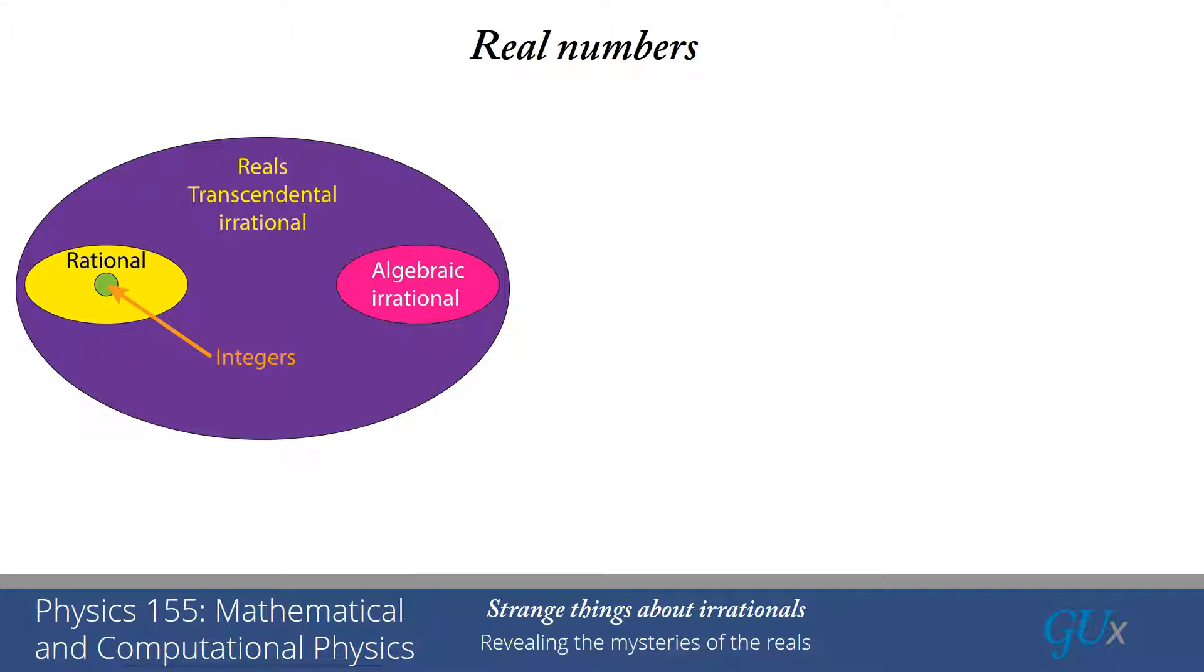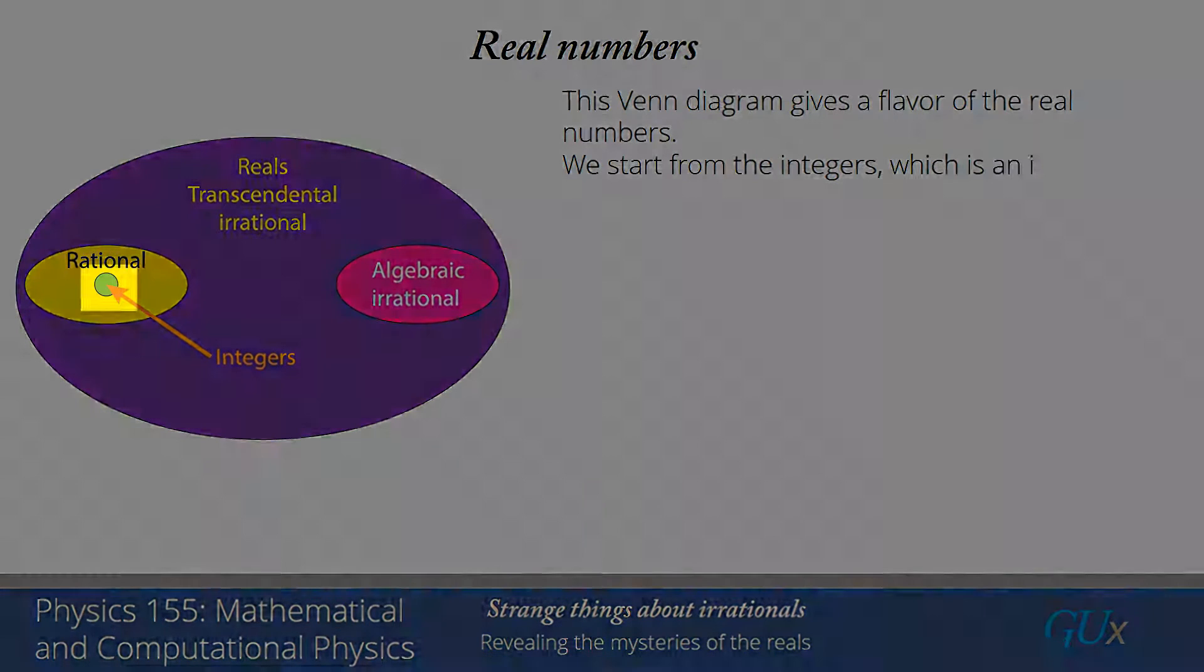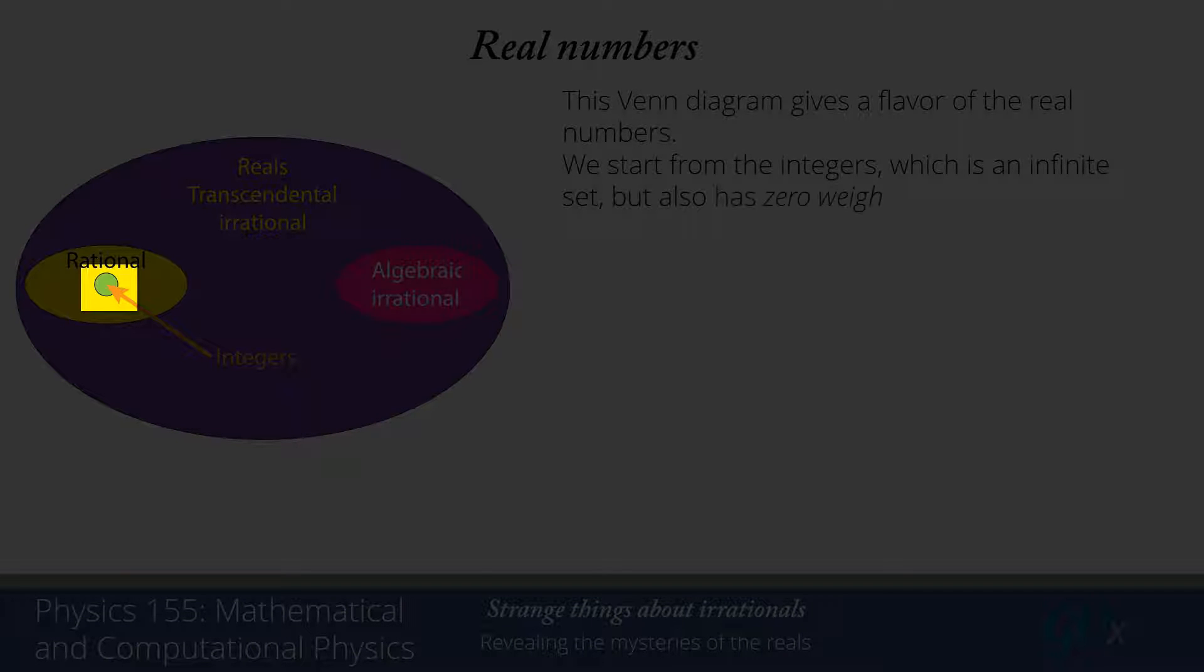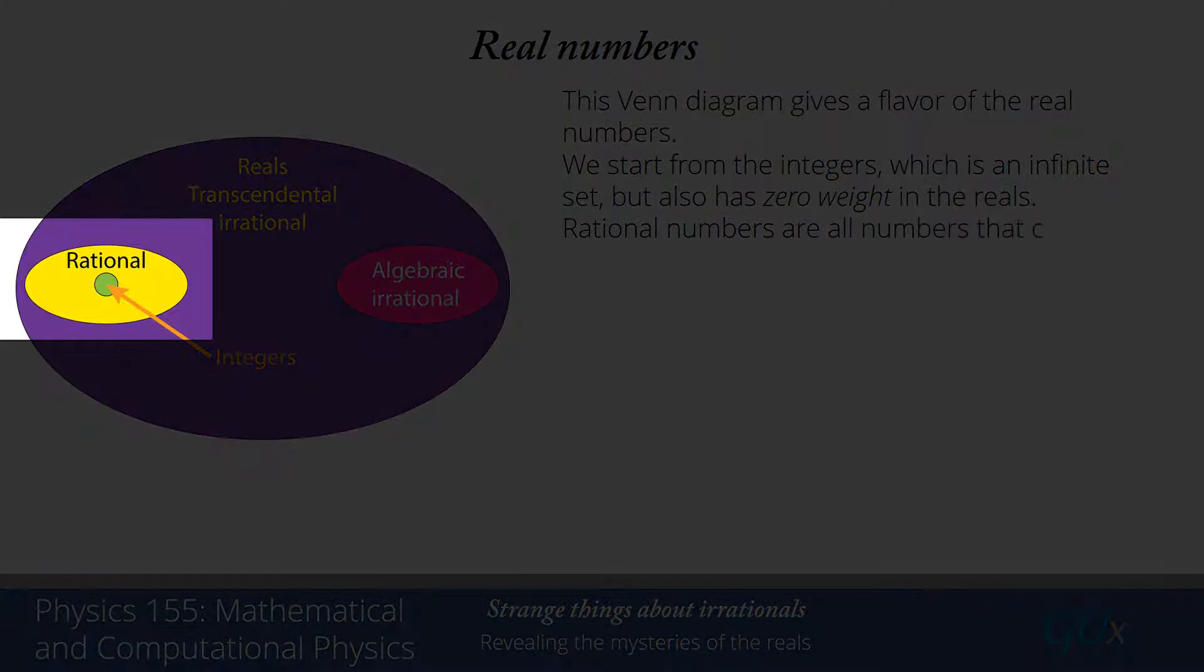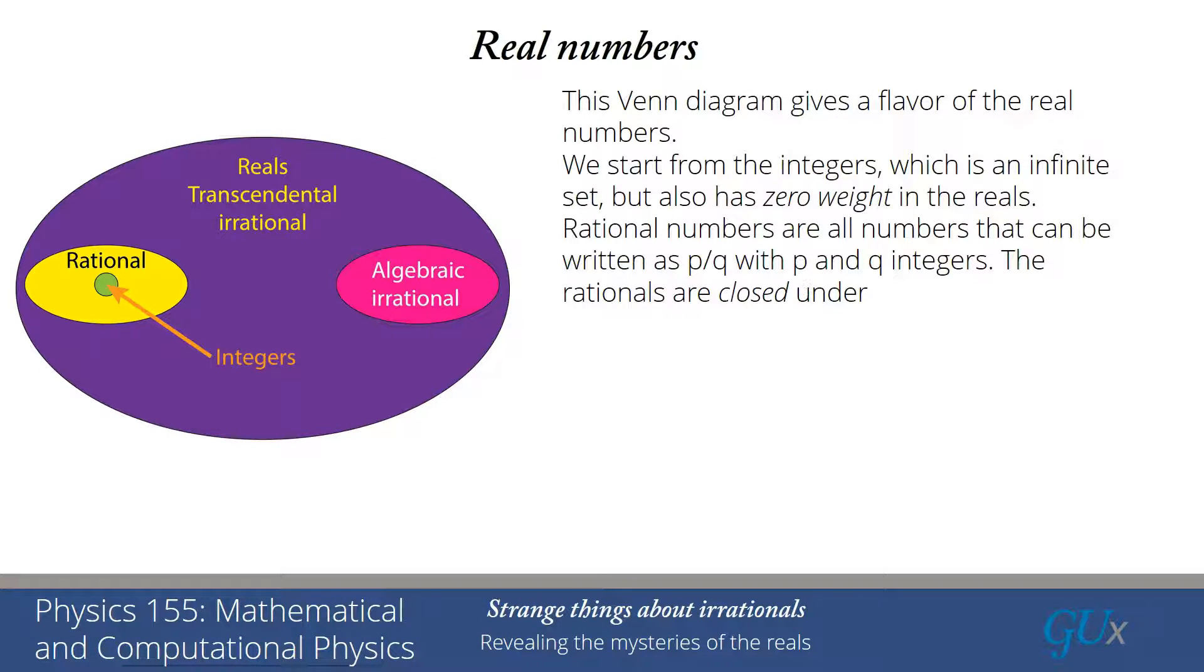Here I have on the left-hand side a Venn diagram that gives a flavor of the way the real numbers are structured. The first thing to focus on is the integers, represented by the small green circle. It's an infinite set because the integers go from minus infinity to plus infinity, but it has zero weight in the reals. It's a countable infinite set because I can count all of the different integers. Next are the rational numbers, indicated with the yellow ellipse. Those are all the numbers that can be written as p divided by q when p and q are integers.